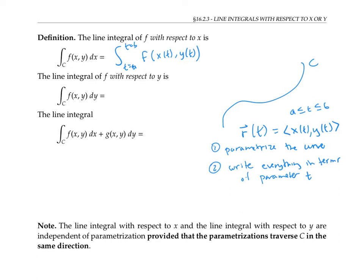Using differential notation, when x is a function of t, then dx is going to equal x prime of t dt. So substituting in x prime of t dt for dx gives us our definition of the line integral with respect to x.